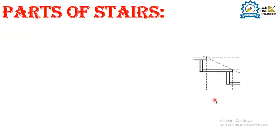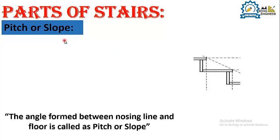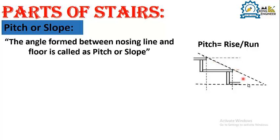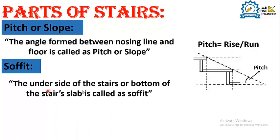What is pitch or slope? The angle found between the nosing line and the floor is called pitch or slope. As you can see here, this is the nosing line and this is the ground level of the staircase. The angle found between the nosing line and the ground floor level is called pitch, and it is equal to rise divided by run.